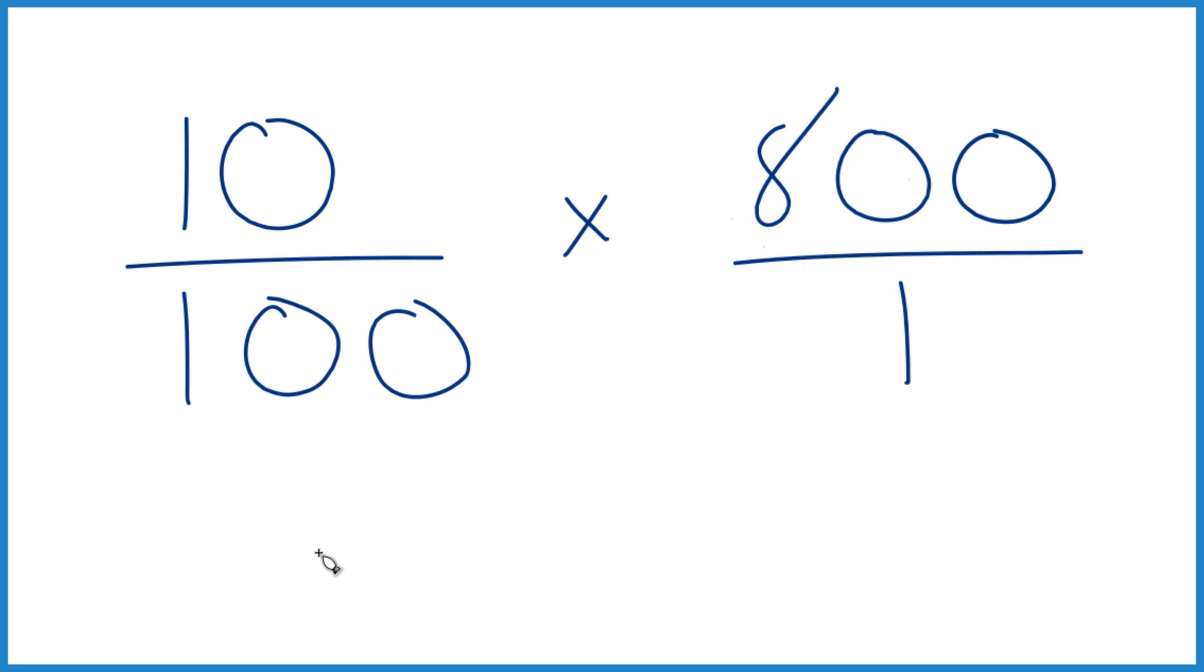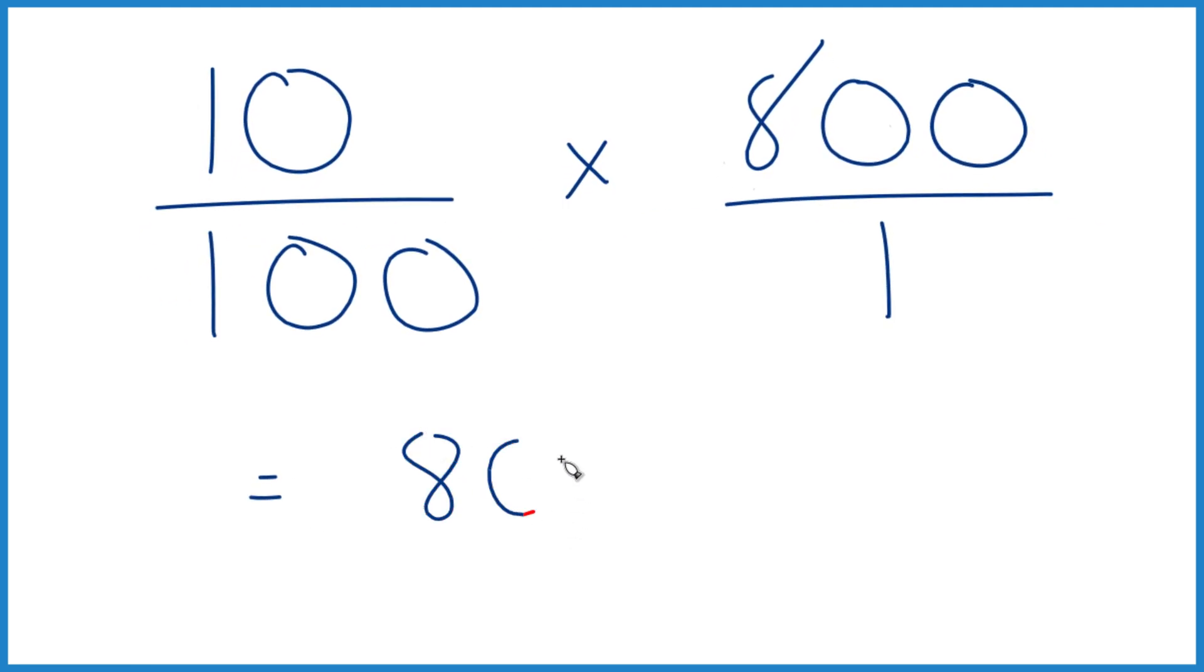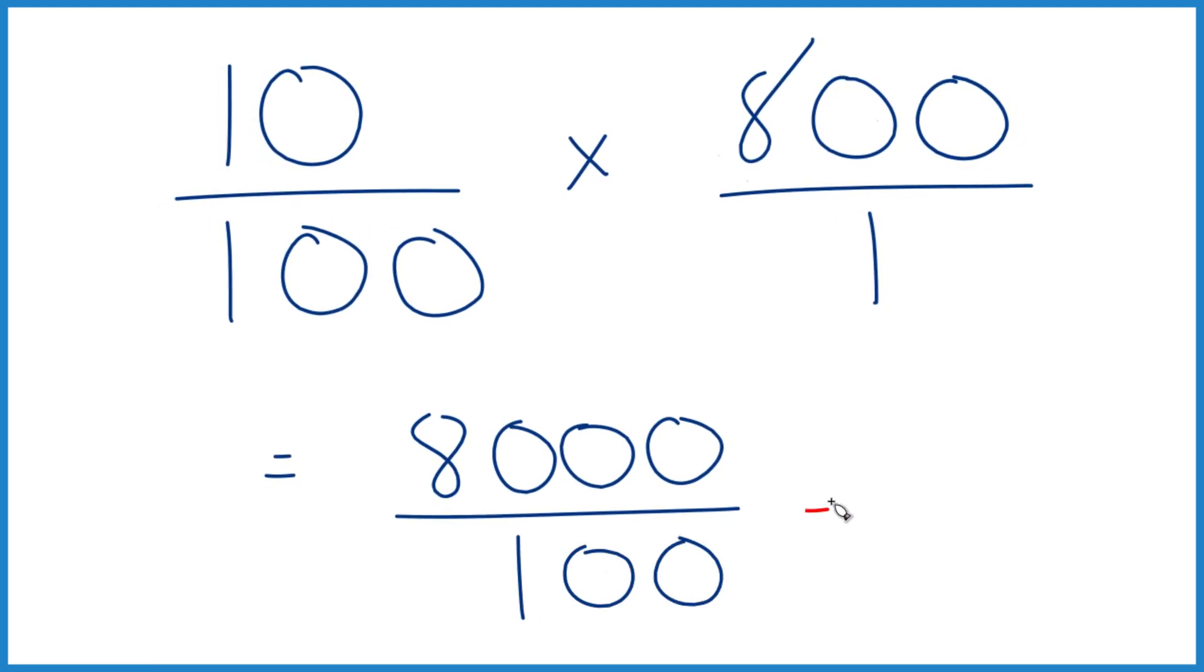But 10 times 800 equals 8,000. Then 100 times 1 equals 100. So 8,000 divided by 100 is 80 over 1, and that is 80. Just like we found before when we found 10% of 800.